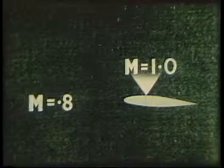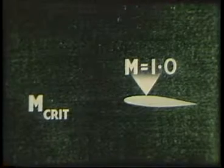This diagram will remind us of what's happening. As the flight Mach number increases, the flow at the point of maximum speed up on the wing reaches Mach 1, the speed of sound. The wing has reached its critical Mach number.